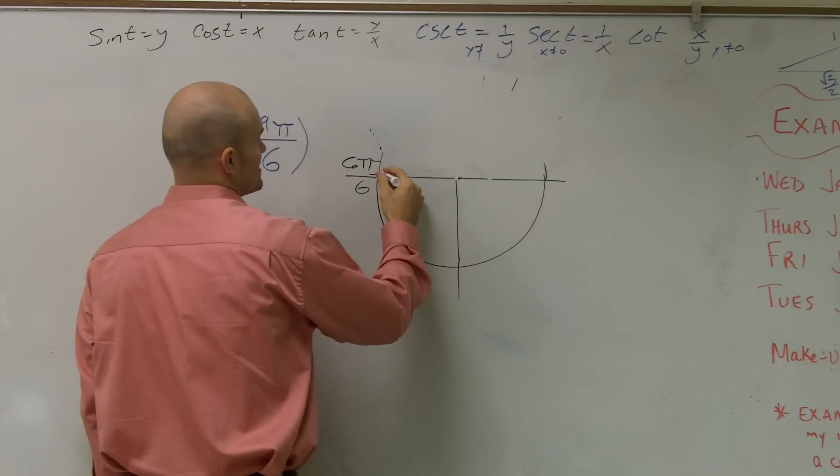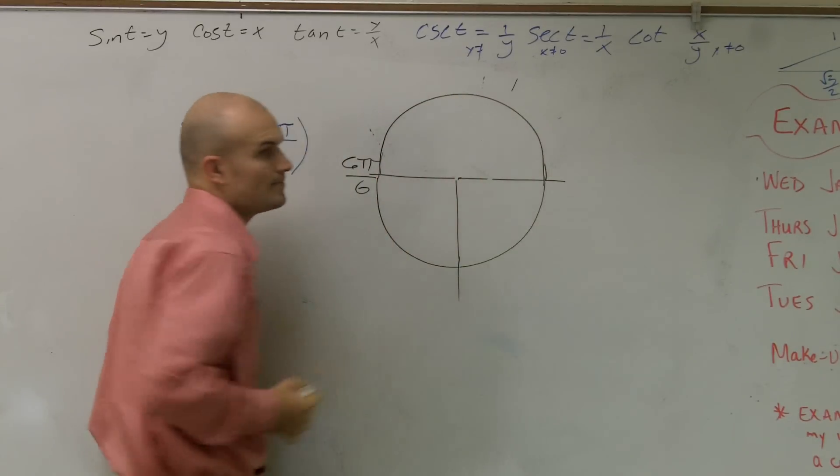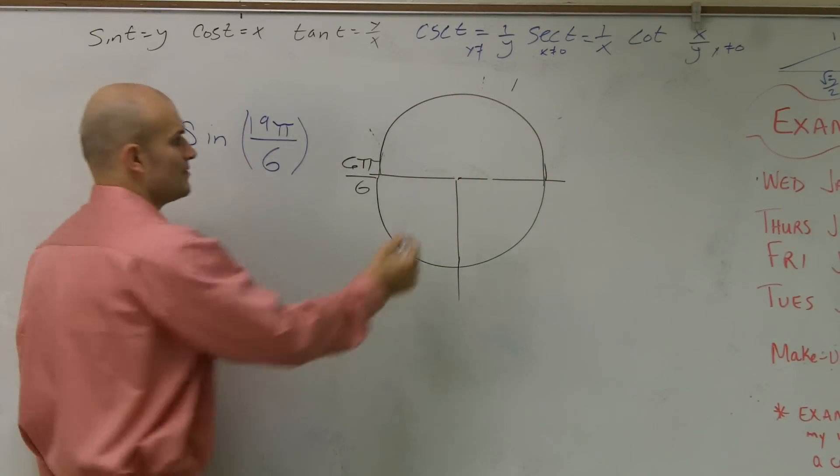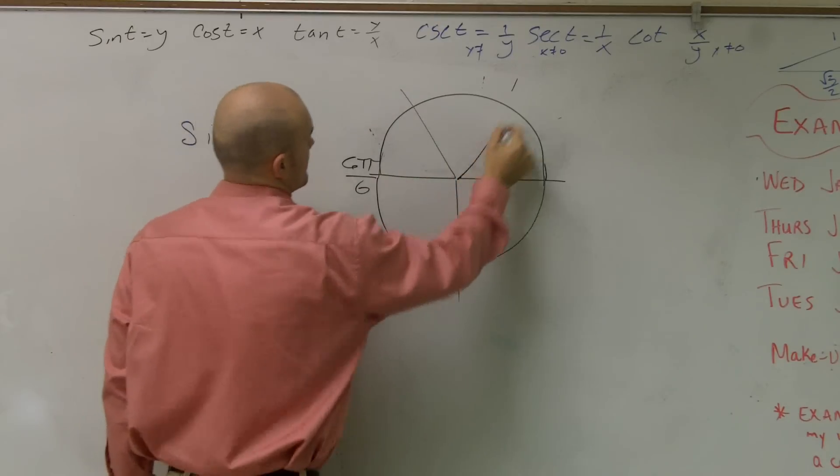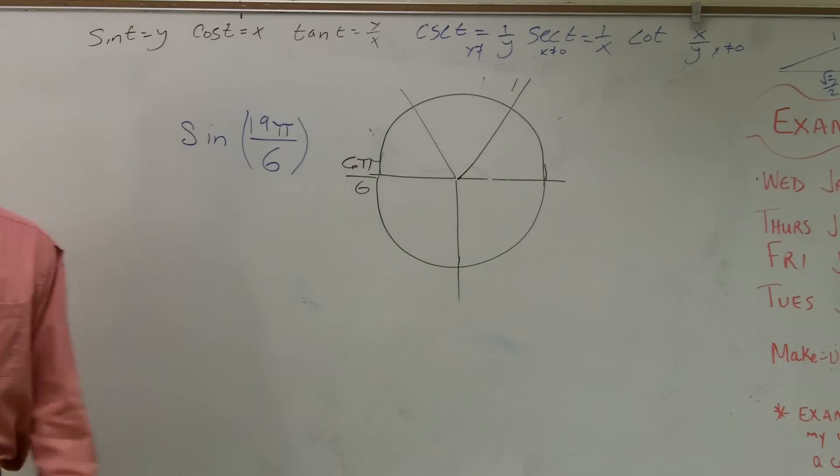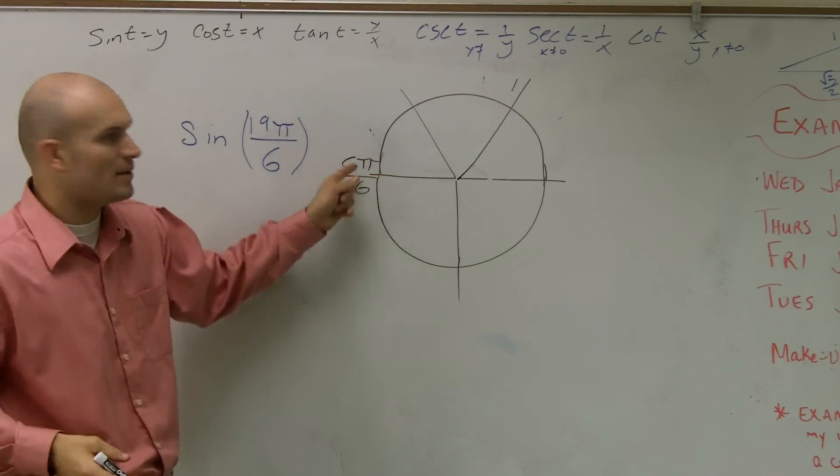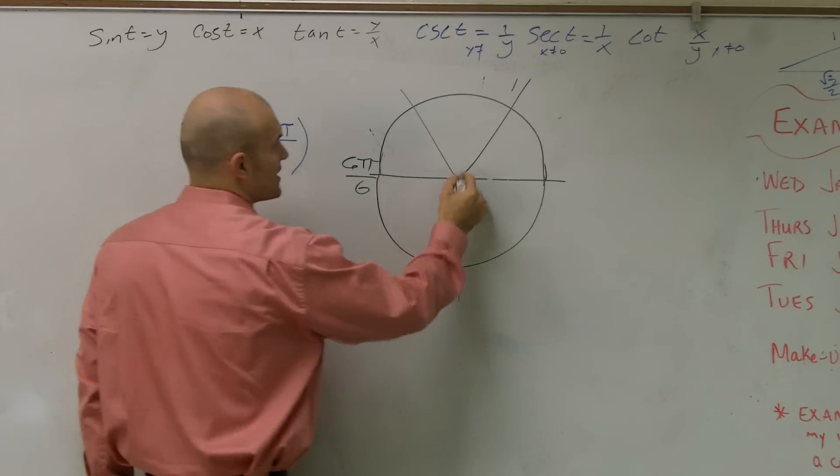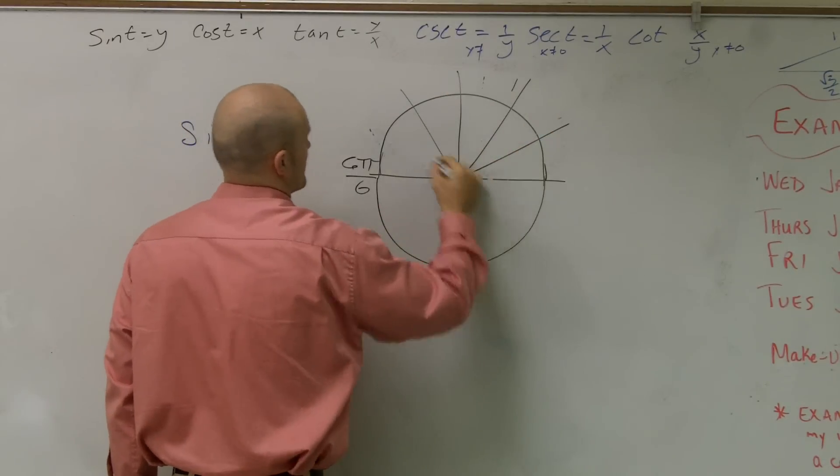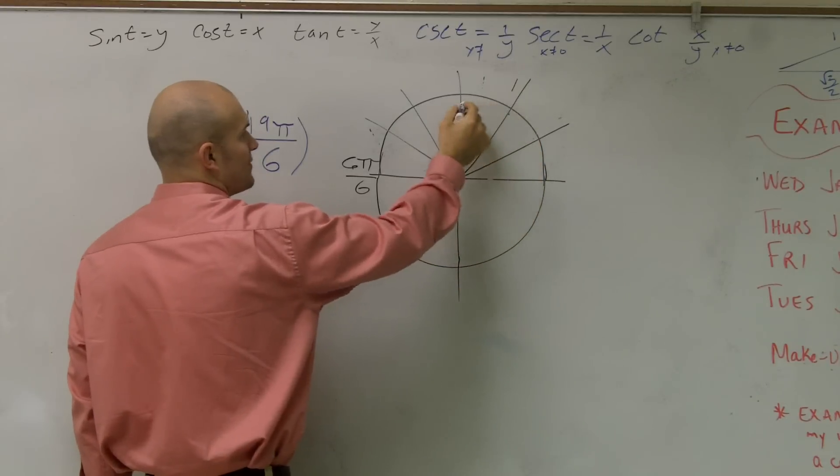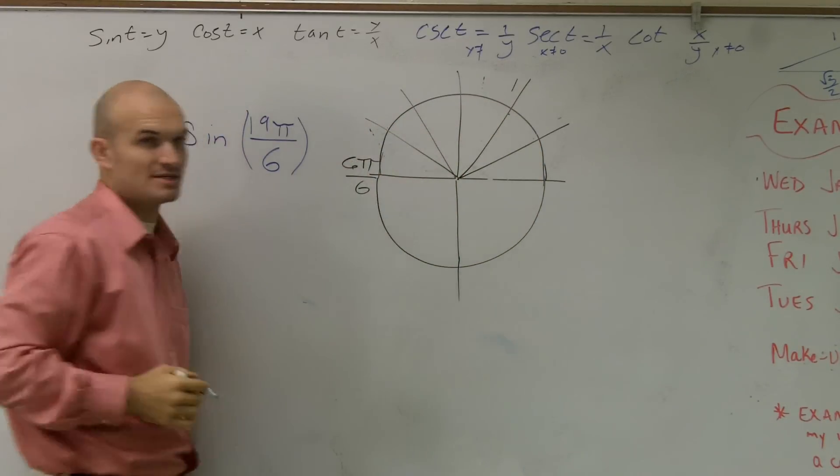So if I want to see what the 1/6 is, again, what I can do is break it up into thirds. Then what I'll do is, so that's 1/3, but remember I need to get 6 over 6, so I'll break all these up into halves. So 1π, 2π, 3π, 4π, 5π, 6π over 6.